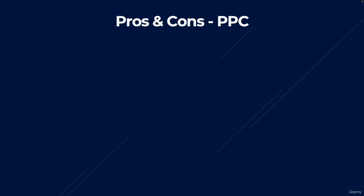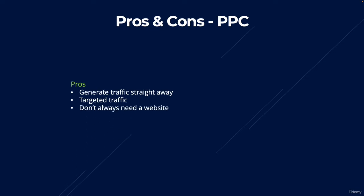So what are the pros of PPC? You can generate traffic literally straight away — you can go onto Google Ads, create an ad, and within an hour start generating clicks to your affiliate offers. The second pro is that it allows you to generate targeted traffic; you can tell Google what search terms you'd like your ads to show for. The third pro is that you don't always need a website — you can send traffic directly to your affiliate offer or affiliate link's landing page.